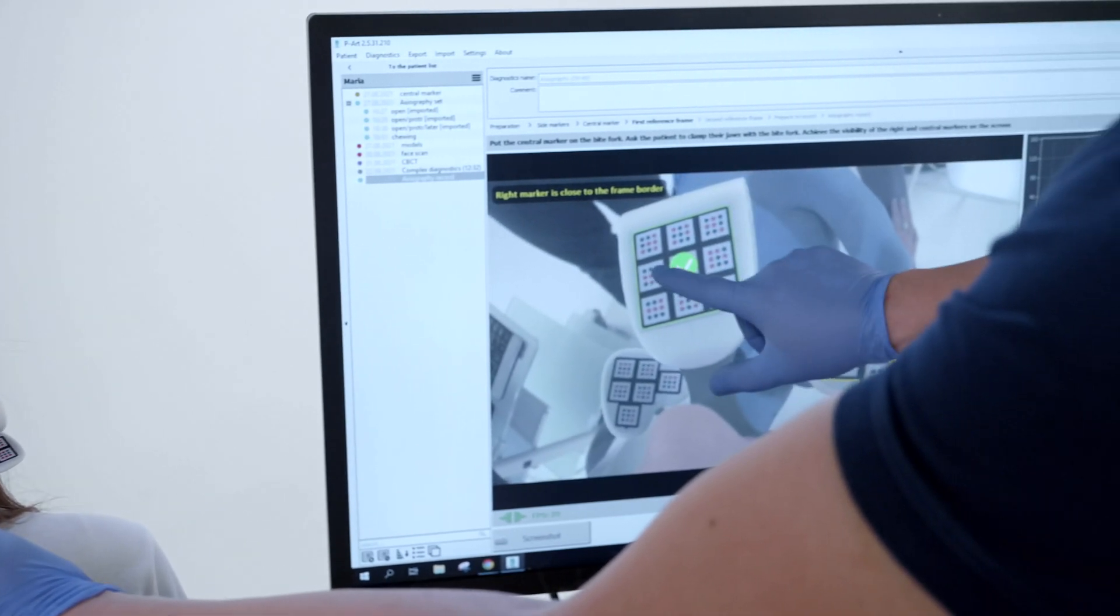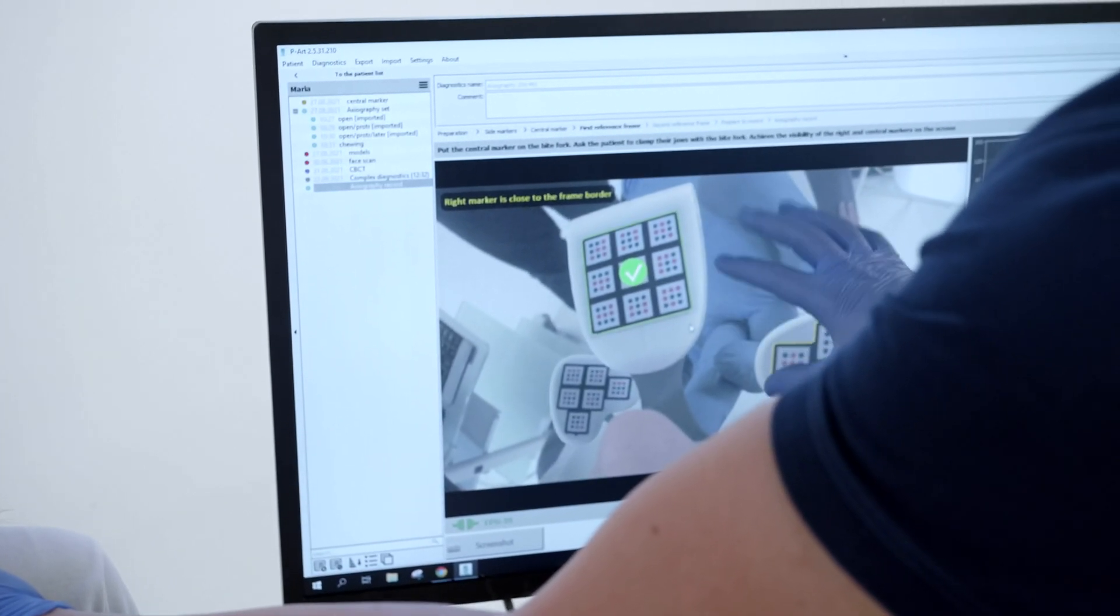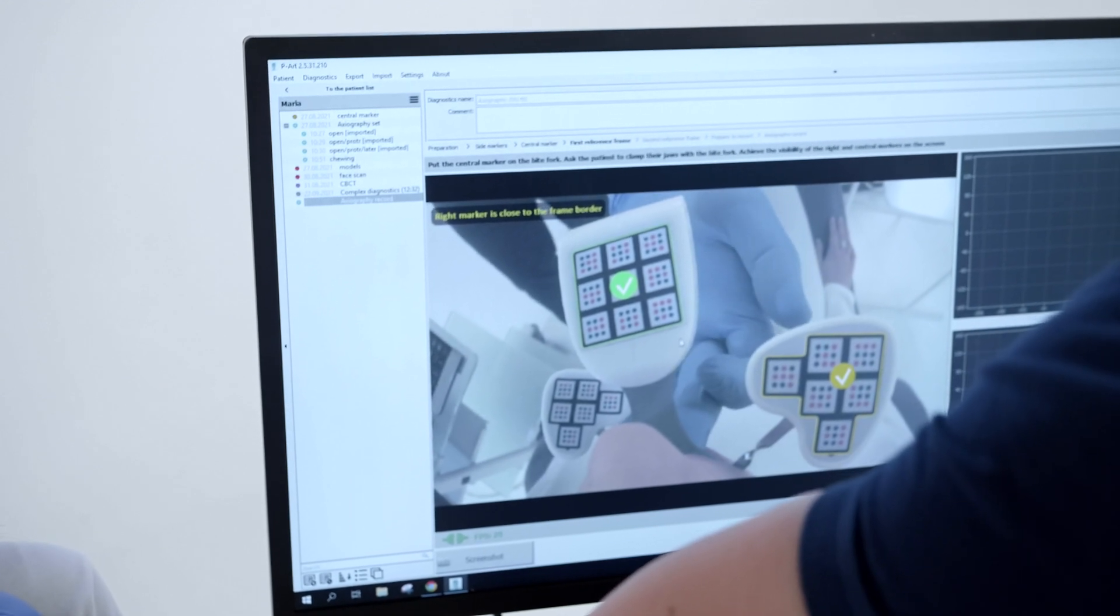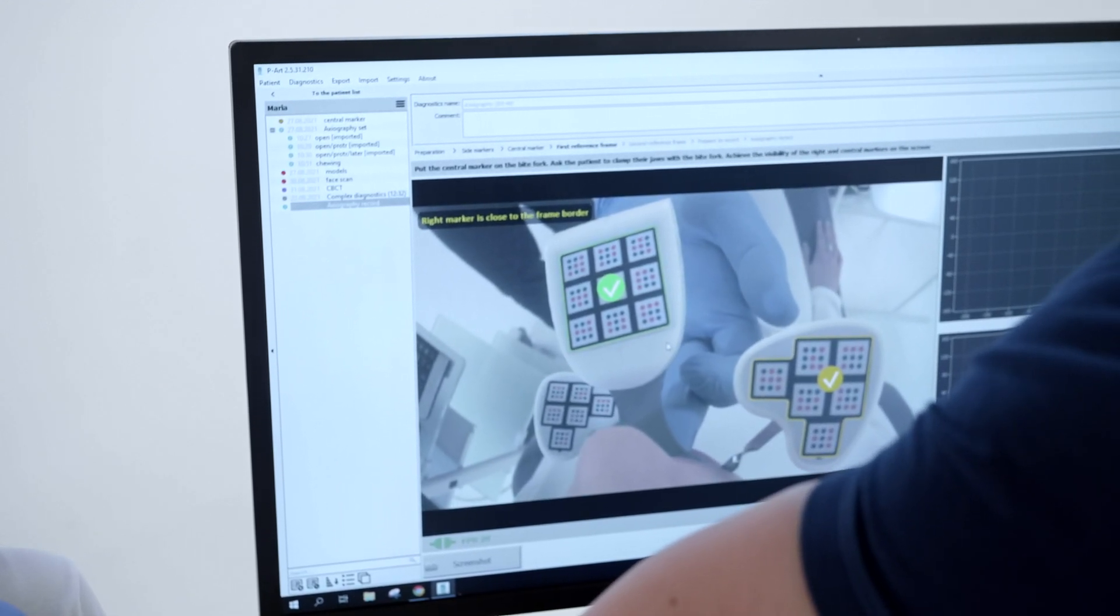If the right marker changes location, then you need to return to the stage of using markers with a digital arc and redefine their location relative to each other.